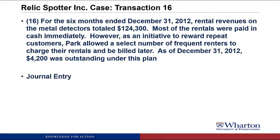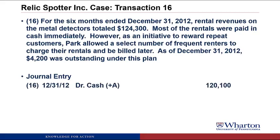To do the journal entry for this one, we have to recognize that there were three accounts involved. We got rental revenues of $124,300. We have accounts receivable of $4,200 — that's what the customers owe us under the frequent renter plan. The difference between $124,300 and $4,200 is $120,100 of cash that we receive. Anytime we receive cash, we debit it, so we debit cash for $120,100.